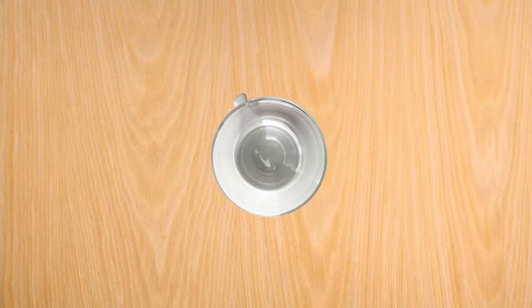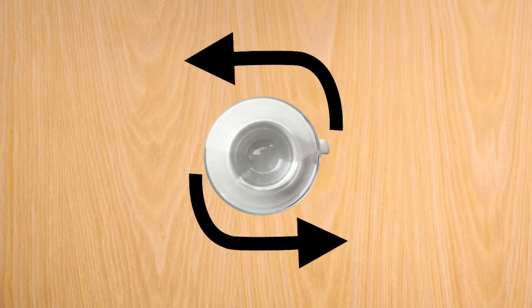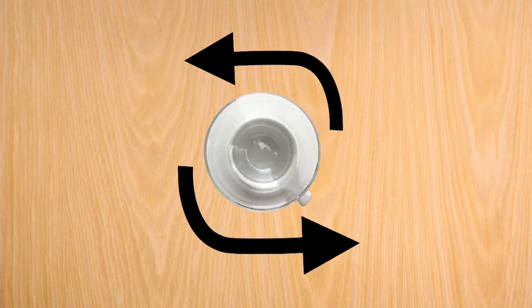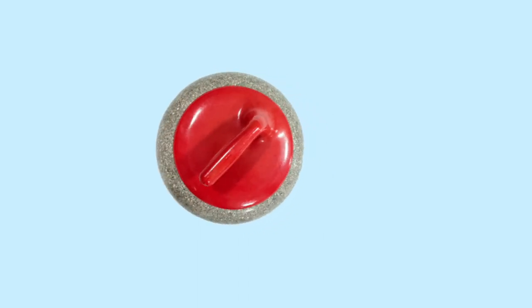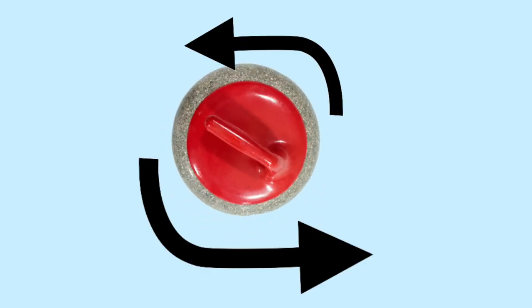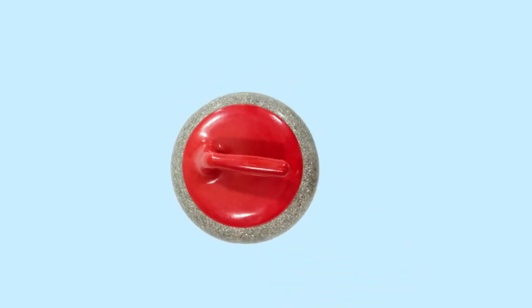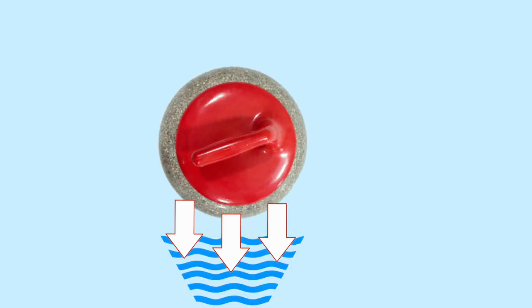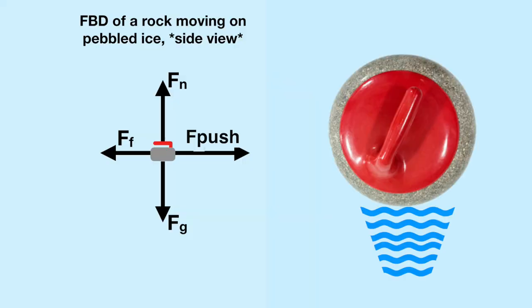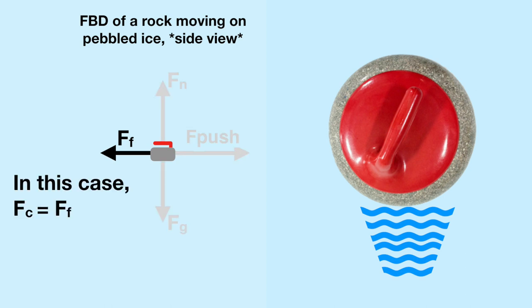When you spin a cup counterclockwise, the force in the front pushes it to the right and the force in the back pushes it to the left. Because the force in front is stronger than the force in the back, the cup follows the front force and spins clockwise. When you spin a curling rock counterclockwise on the ice, you would expect the same result, but actually the rock spins counterclockwise. One theory of why this occurs is because the pressure at the front of the rock melts some of the ice to create a thin layer of water.